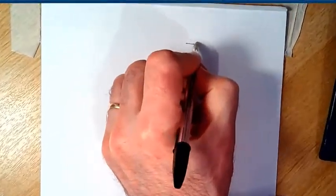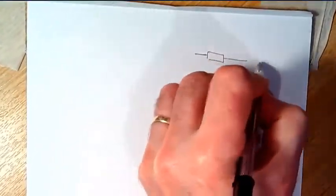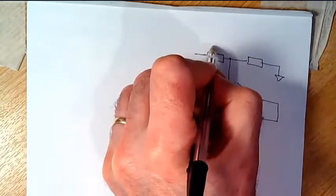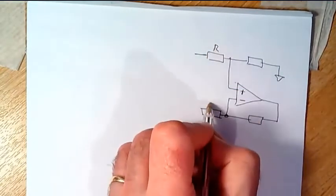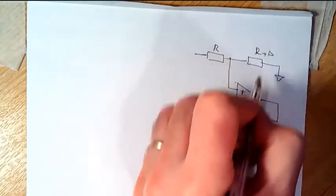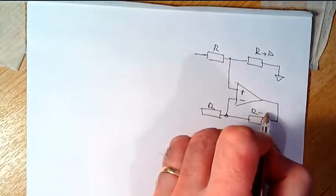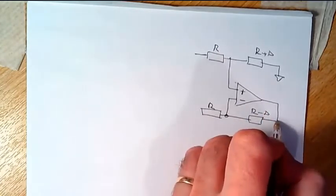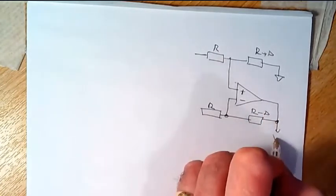So let's draw in our second stage again, that's r, r, r plus delta, r minus delta, v out.